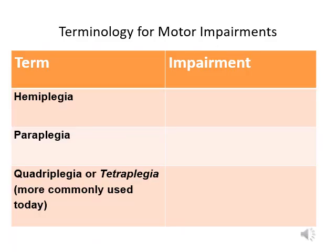Spinal cord injury can cause motor or sensory impairment. There are some terminology for the motor impairment: hemiplegia, paraplegia, or quadriplegia.